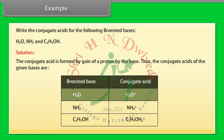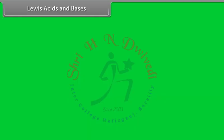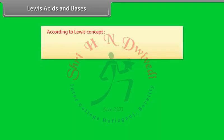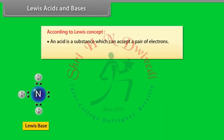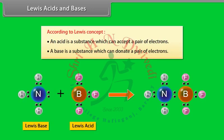For H₂O, the conjugate acid is H₃O⁺; for NH₃, the conjugate acid is NH₄⁺; for C₂H₅OH, the conjugate acid is C₂H₅OH₂⁺. According to Lewis concept, an acid is a substance which can accept a pair of electrons, and a base is a substance which can donate a pair of electrons — for example, in the reaction BF₃ acts as an acid.